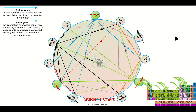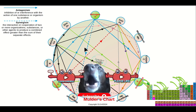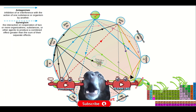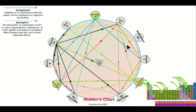That's the spider's web known as Mulder's Chart. It's absolutely amazing how all of these nutrients interact with each other — it's incredible.